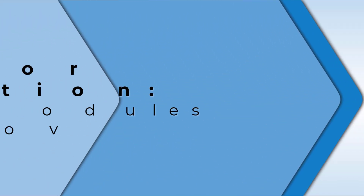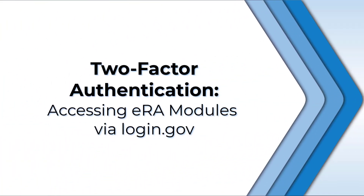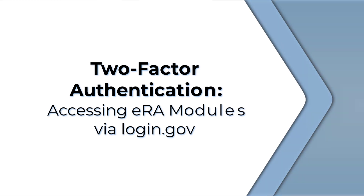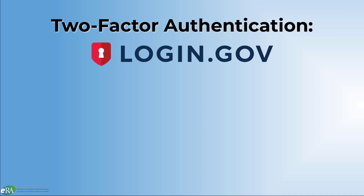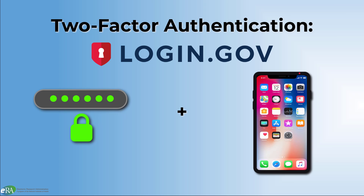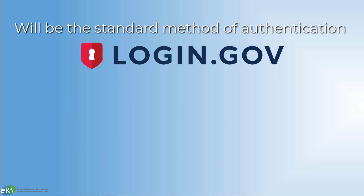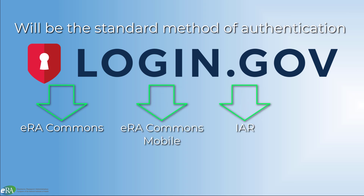Two-Factor Authentication: Accessing ERA modules via login.gov. ERA is moving to two-factor authentication using login.gov, meaning access to ERA systems will require something you know — a password — and something you have — a phone or other device. This new login method will become standard for users of ERA Commons, Commons Mobile, IAR, and Assist.